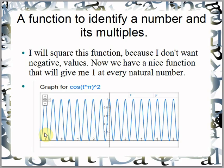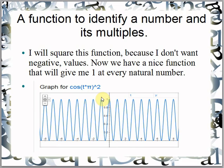Now, if you square the cosine function, you're going to get either a positive 1 at integer intervals or a number less than 1 for any non-integer. So if I put 1 for T, I get 1; if I put 2, 1; 3, 1; 4, 1; 5, 1; and so on. If I put 1.5, it's going to give me something less than 1 — not 1. So this squared function gives me 1 for integers and a non-1 for non-integers.